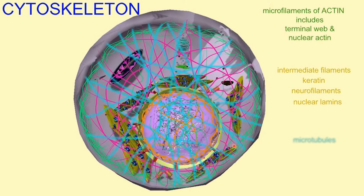There are three main cytoskeletal elements: the microfilaments, the intermediate filaments, and the microtubules. The microfilaments are the actin fibers, and the intermediate filaments include structures such as keratin, neurofilaments, and nuclear lamins. There is also a structure known as the microtubules.